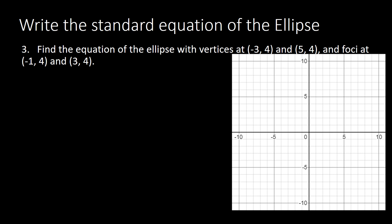We have: find the equation of the ellipse with vertices at (-3, 4) and (5, 4), and foci at (-1, 4) and (3, 4). We plot these on the graph — vertex one at (-3, 4), vertex two at (5, 4), focus one at (-1, 4), and focus two at (3, 4).